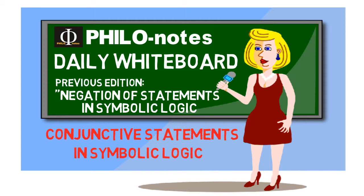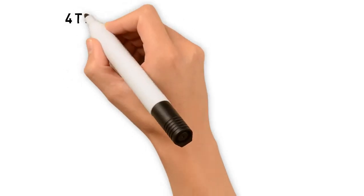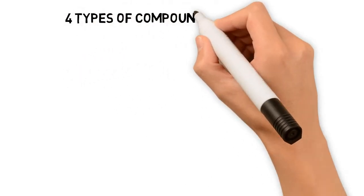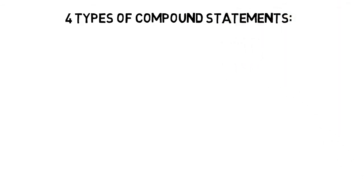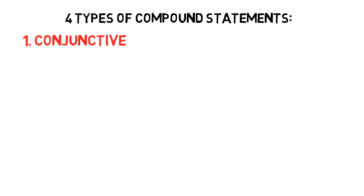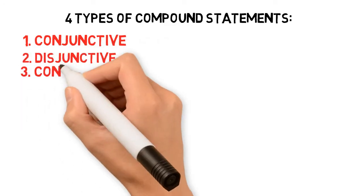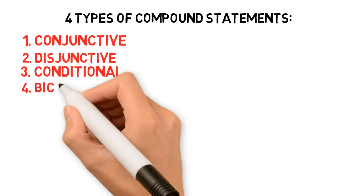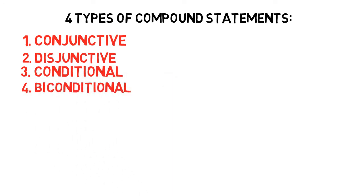Alright, let's move on. So basically, there are four types of compound statement used in symbolic logic, namely: conjunctive, disjunctive, conditional, and biconditional. And in this edition, I will focus only on conjunctive statements.